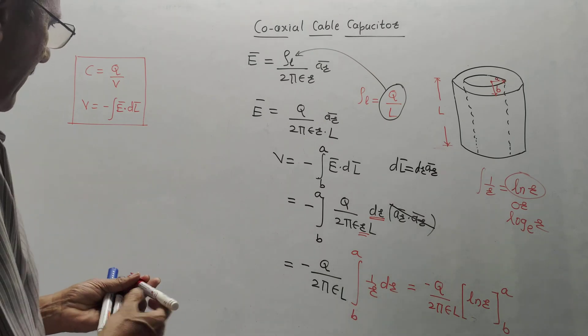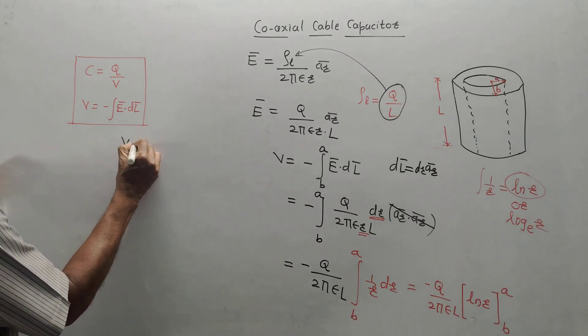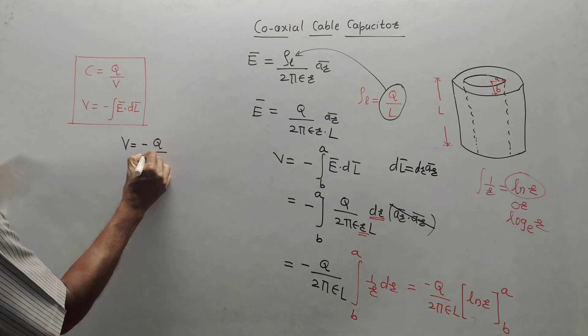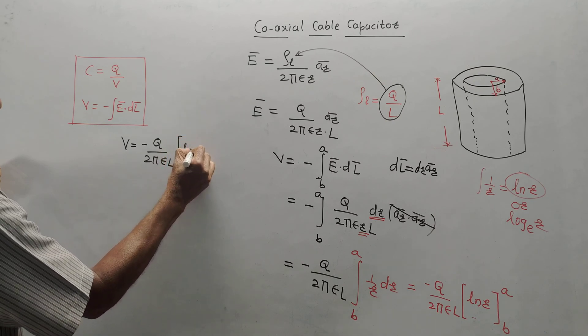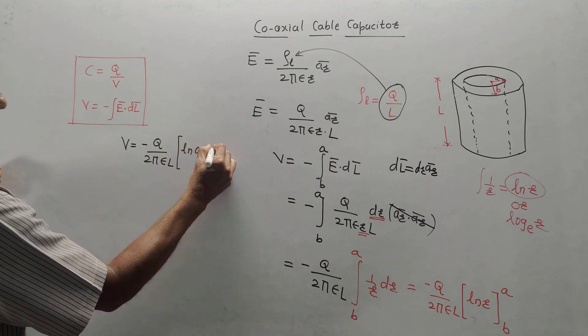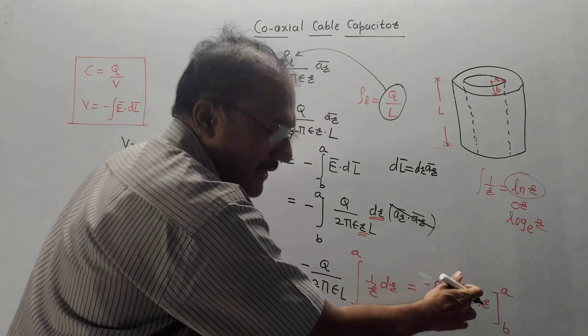Now, put the upper limit, then put the lower limit. So, equation of voltage can be written as minus Q upon 2 pi epsilon L, L N A minus L N B. I have put upper limit and then minus lower limit.